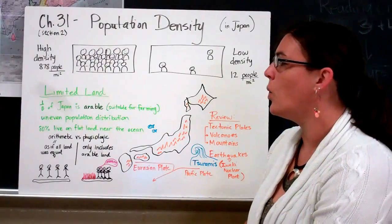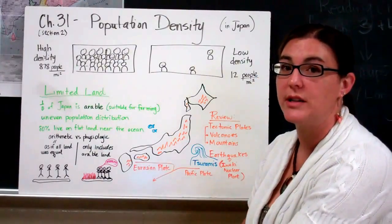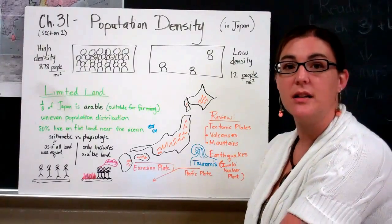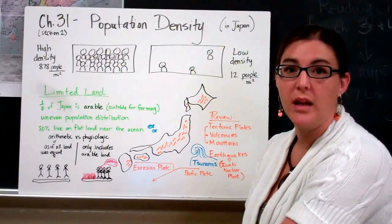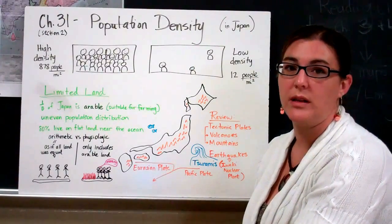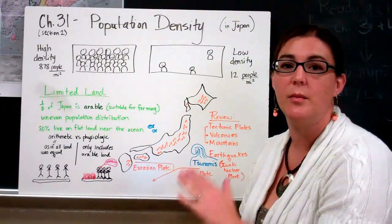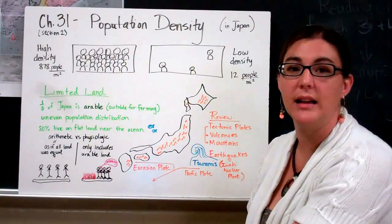When you're talking about Japan, one-eighth of the entire country is considered arable. And remember that arable is a distinction that talks about land that's suitable for farming, meaning that it gets adequate sunlight, that it isn't too rocky, that the soil is appropriate, or it's not too steep or too highly elevated.